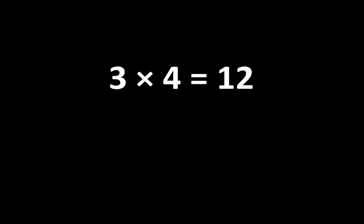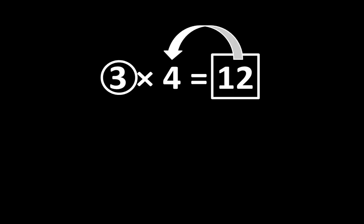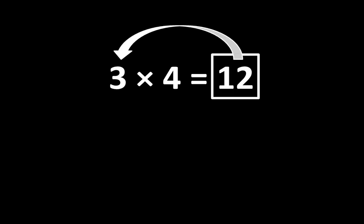When you examine 3 times 4 is equal to 12, you may notice that 12 is greater than 3, and 12 is also greater than 4. But how many times greater? Here is the answer: 12 is 4 times greater than 3. And there's another connection: 12 is also 3 times greater than 4. As you can see, there are many relationships among these numbers.